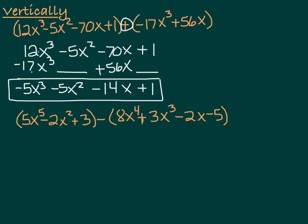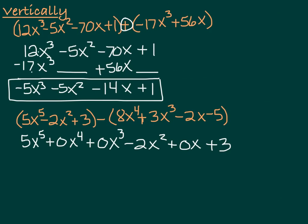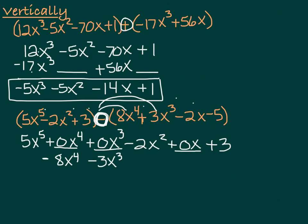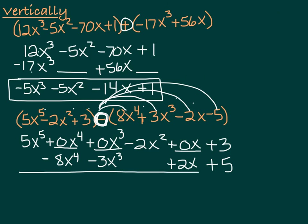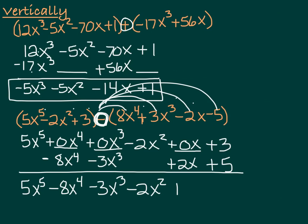We can do the same thing with the next one. Let's line it up. I put 0x to the 4th, 0x cubed, and 0x in the spots where we didn't have every power, because we have those powers on the other side and we need spots for them. Then we're subtracting, so make sure you distribute. I find it easier to distribute right away: minus 8x to the 4th, minus 3x cubed, then minus minus 2x is plus 2x, and minus minus 5 is plus 5. So now I have 5x to the 5th, minus 8x to the 4th, minus 3x cubed, minus 2x squared, plus 2x, and plus 8.